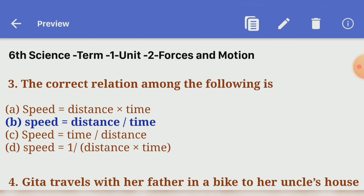Third one: the correct relation among the following is? Answer D, speed equals distance by time.